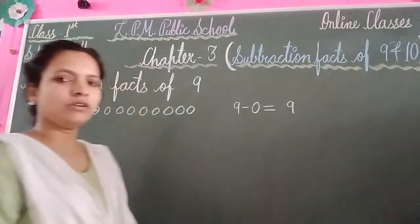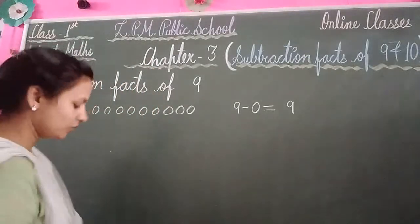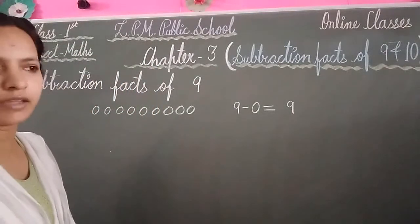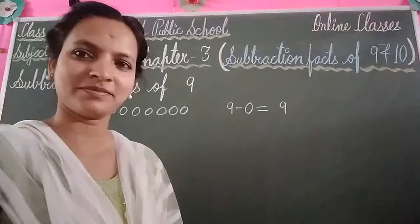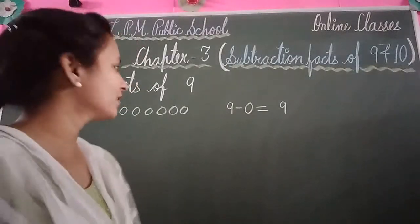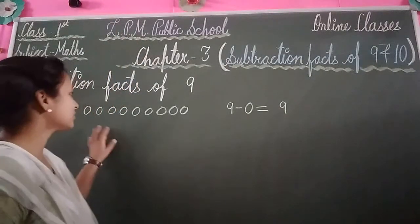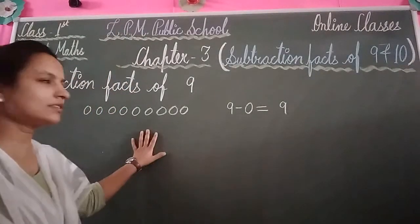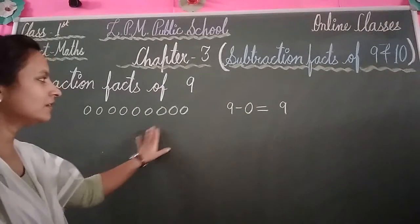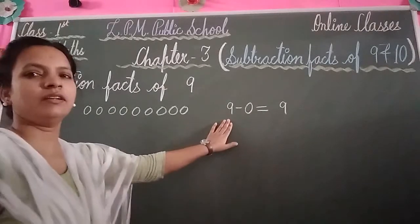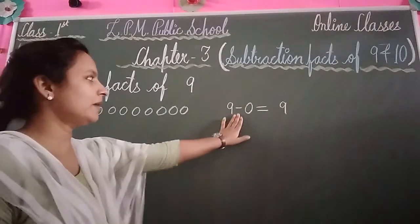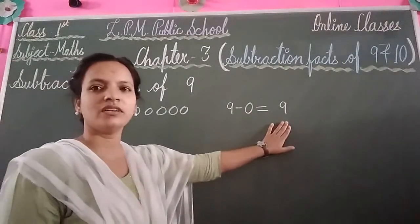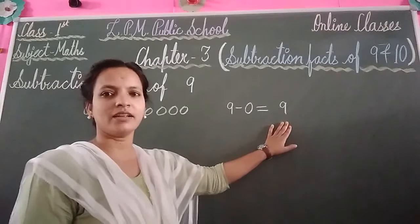Again draw your 9 balls. First draw your 9 balls, then write your number: 9 minus 0 equal to 9. Is that clear, students?